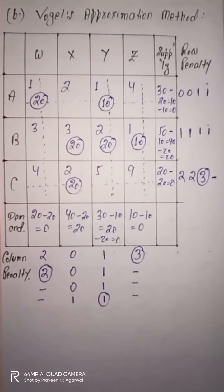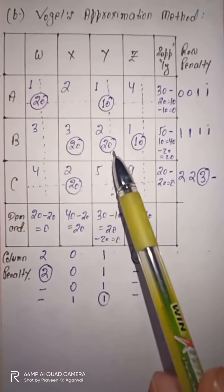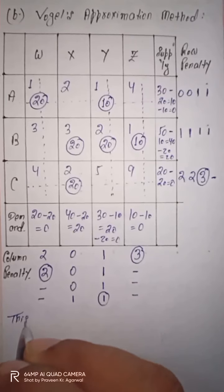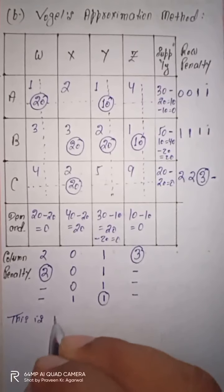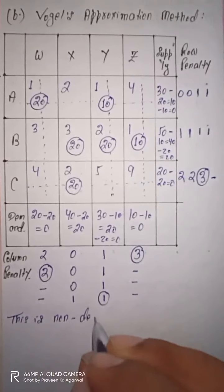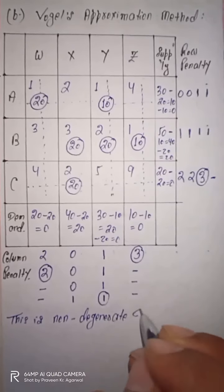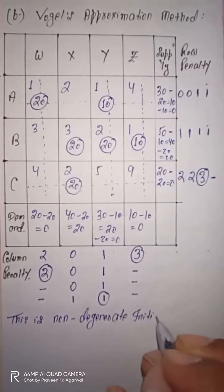We will check whether the solution is degenerate or non-degenerate. The number of required allocations is m plus n minus 1 equals 7 minus 1 equals 6. We obtained 6 allocations, so this is a non-degenerate initial solution.